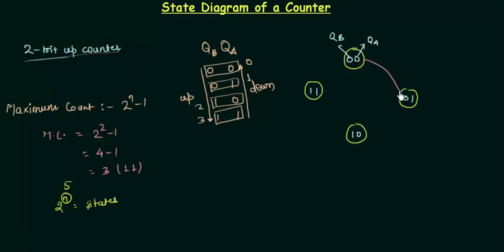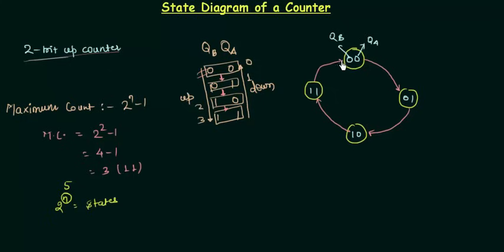I show this transition with an arrow. Similarly, if I am on 0 1 I go to 1 0, because the counter gives these values with every passing clock pulse. After every triggering you will move to the next state. If you are on 0 1 the next state is 1 0, then from 1 0 the next state is 1 1. And once you are on the maximum count, the counter again gives the initial value 0 0, so you go back to 0 0.